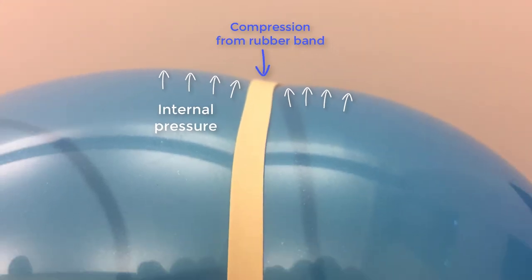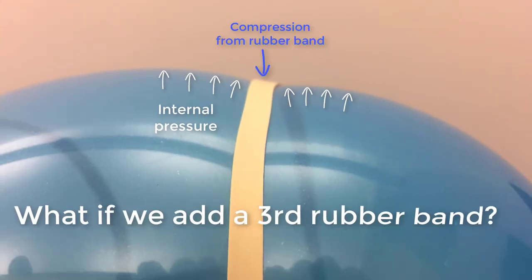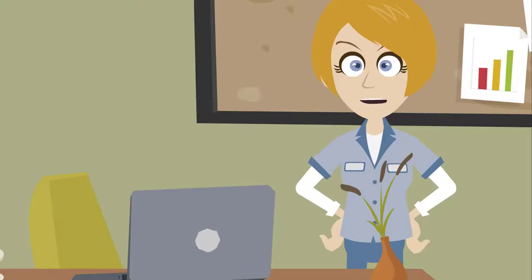So what do we think will happen when a third rubber band is added to the balloon in between the others? Will this create larger peaks in between the bands, since more stiffness is added? Let's find out.